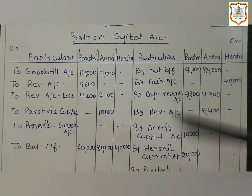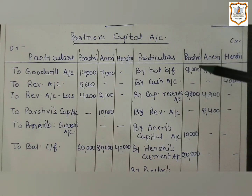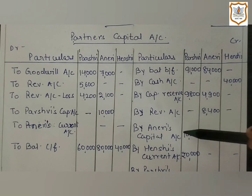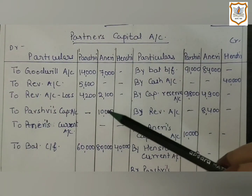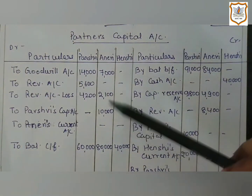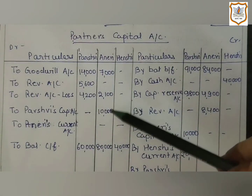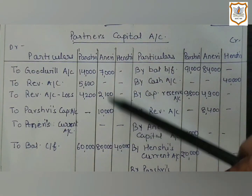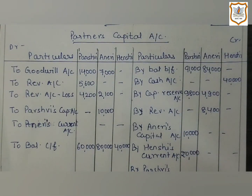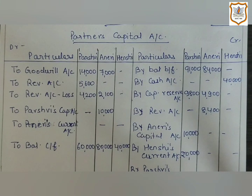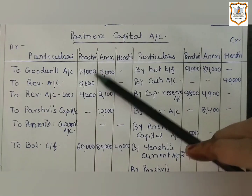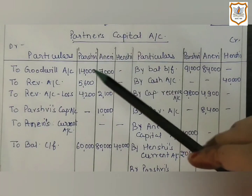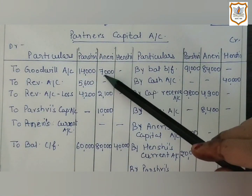Parswee's Capital Account will be credited by 10,000 from Aniri and 20,000 from Hansi. Aniri's Capital Account will be debited as she is gaining. In the old balance sheet, old goodwill of 21,000 is also given. As it is old goodwill, it must be closed and distributed among old partners in their old ratio — so 21,000 is distributed as 14,000 to Parswee and 7,000 to Aniri.